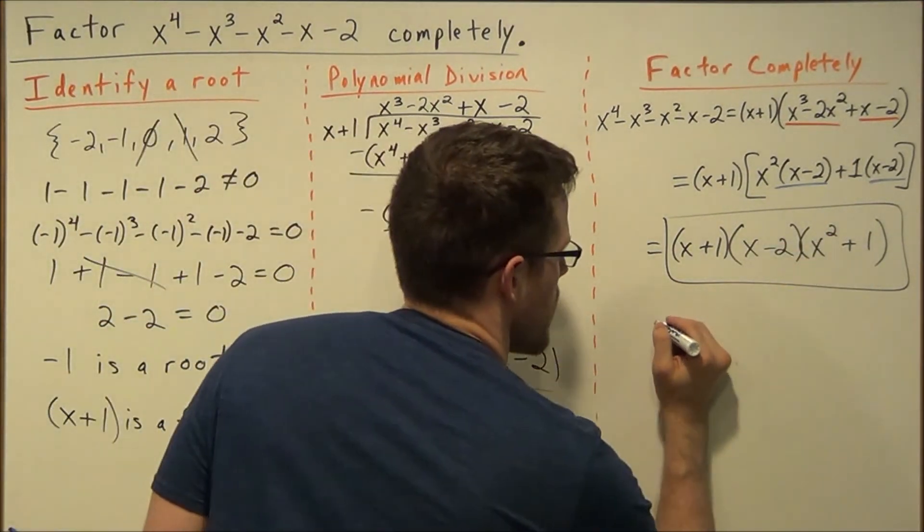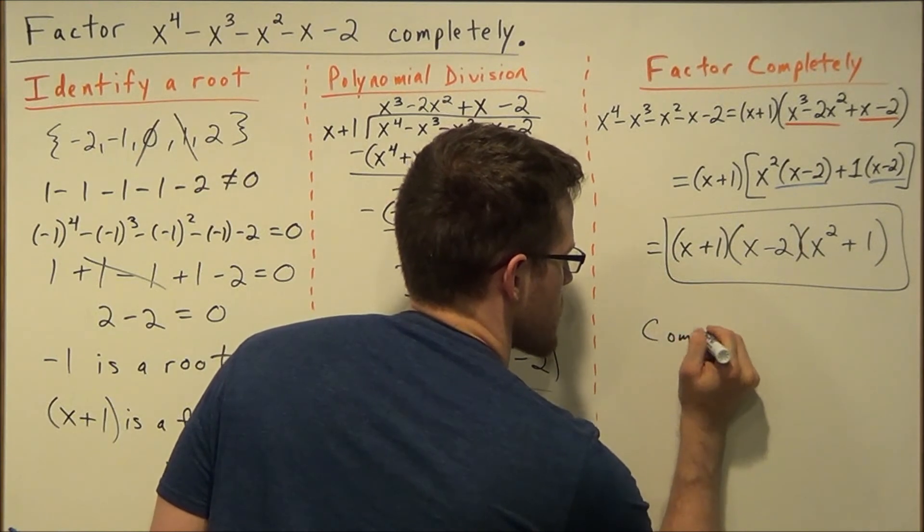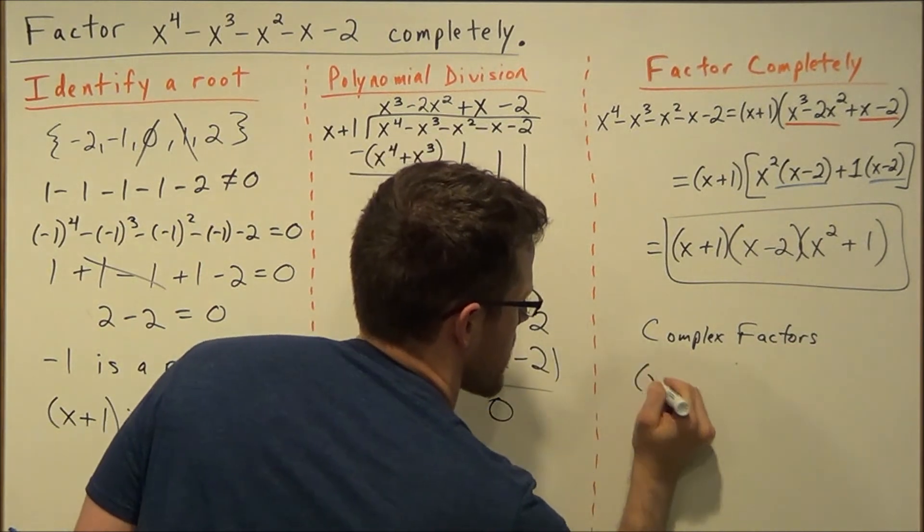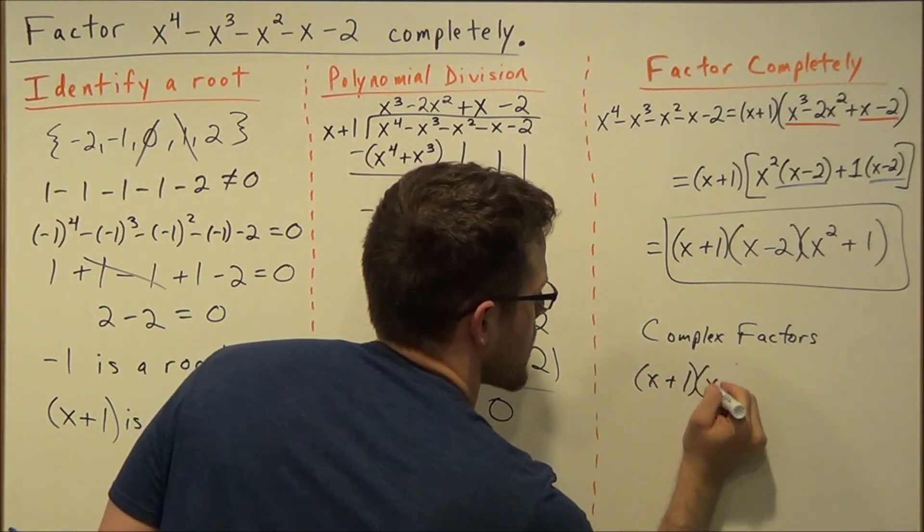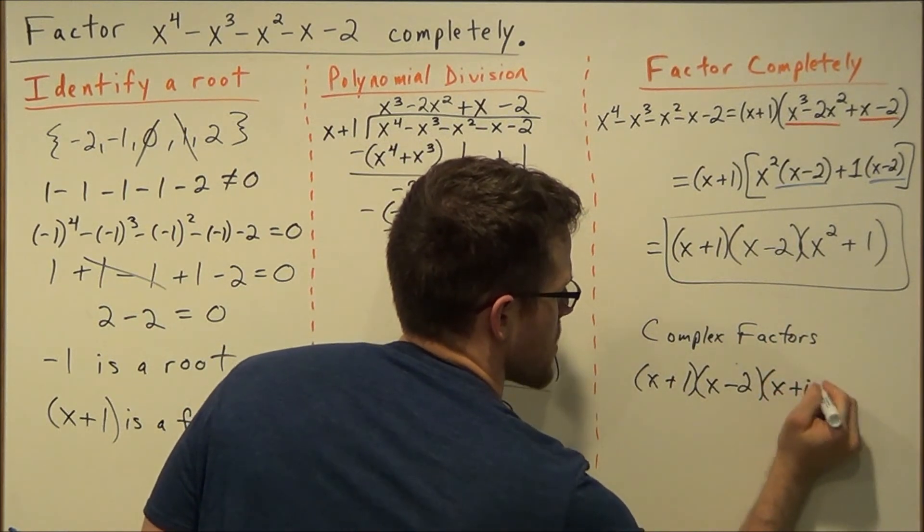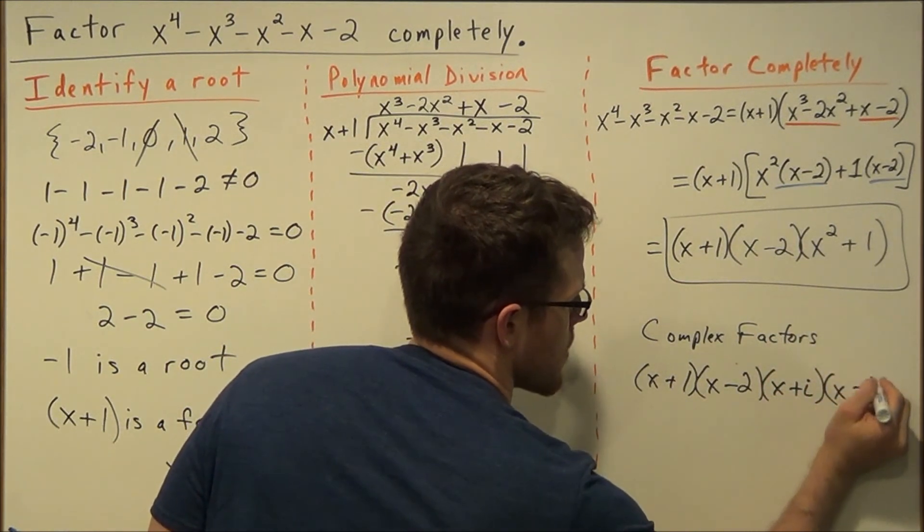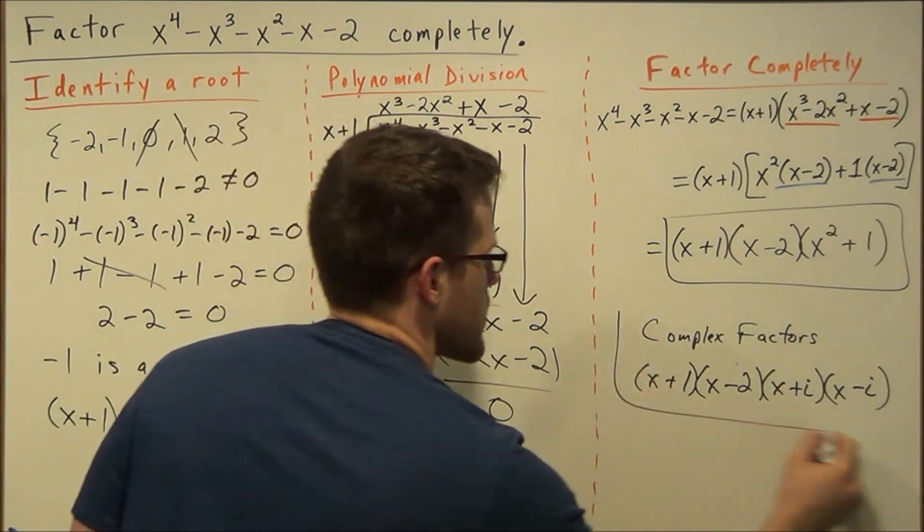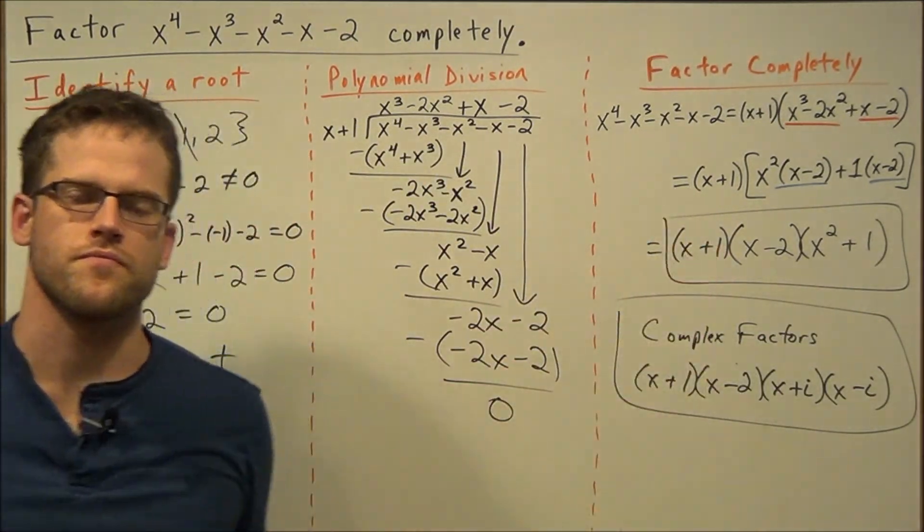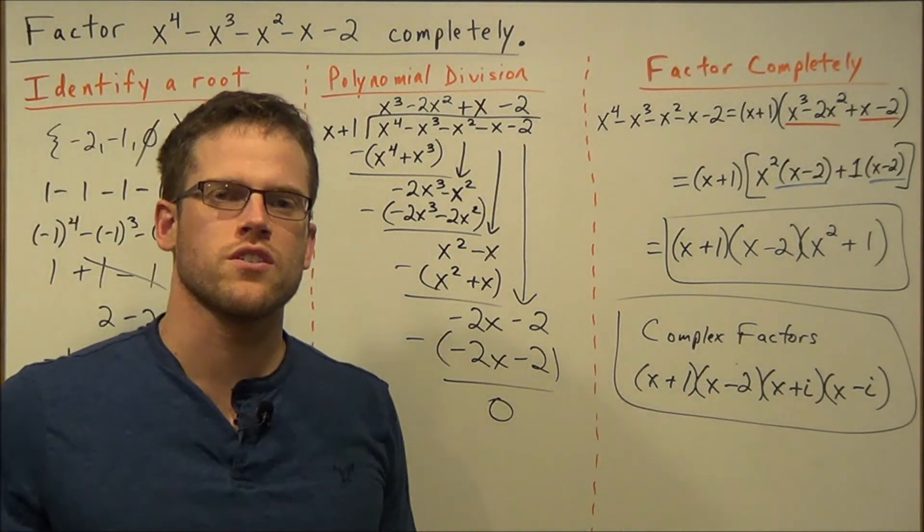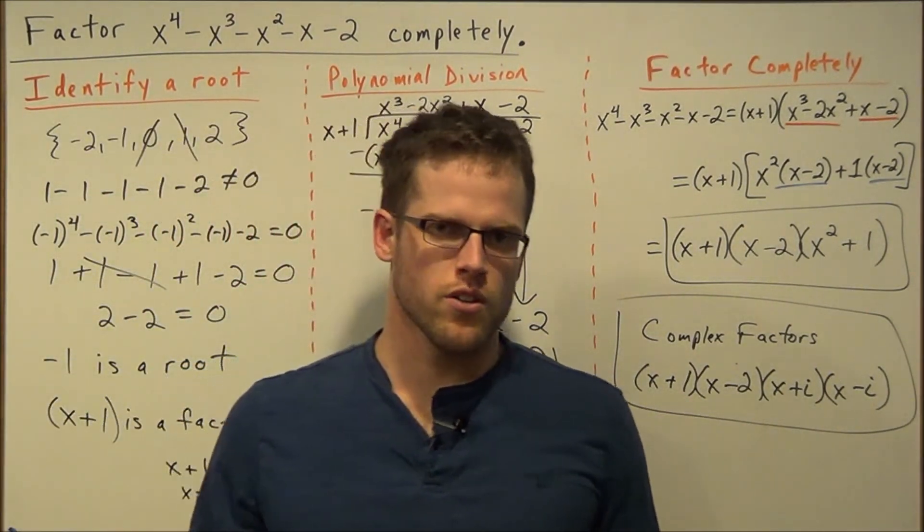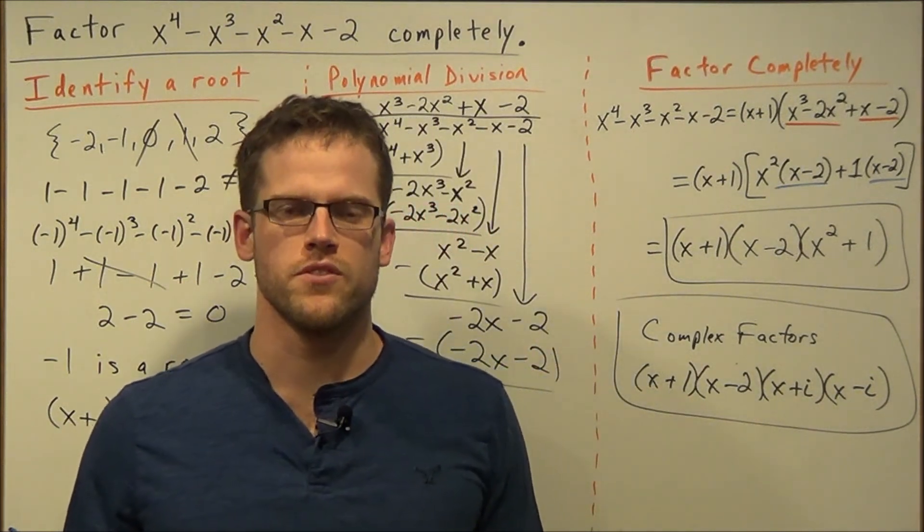But if we were looking for imaginary or complex factors, then our answer would be x plus 1 times x minus 2, and then this would break down to x plus i, x minus i. But usually you'll stop at this line here. Well, this is going to conclude this video on factoring with polynomial division and grouping. Thank you all for watching, and I hope that this was helpful.